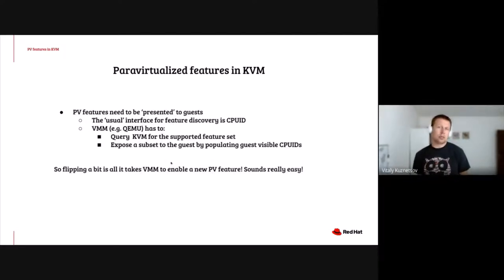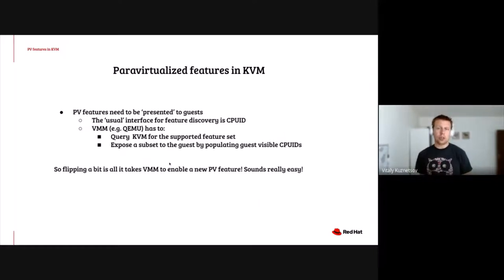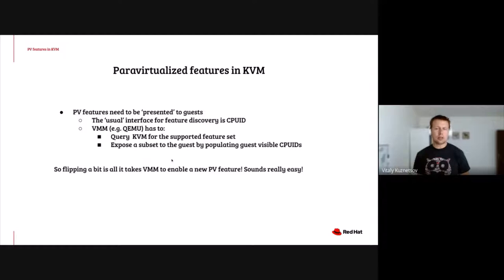Let's get back to PV feature enablement. The userspace VMM's job is to query KVM for a supported feature set and then just set the corresponding feature bits in guest-visible CPUIDs. This sounds really easy — and in fact it is. But making the decision to flip a particular bit is not as easy as it may sound.